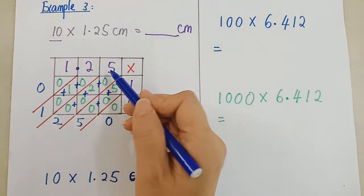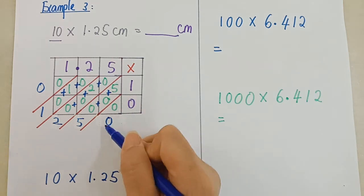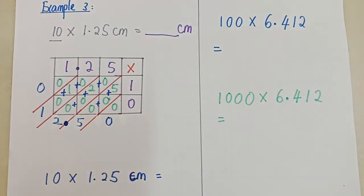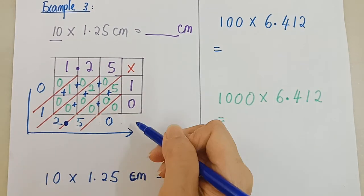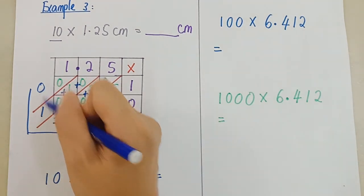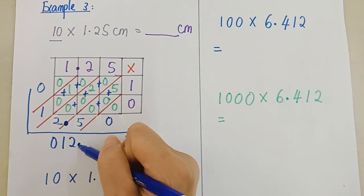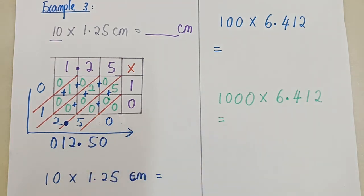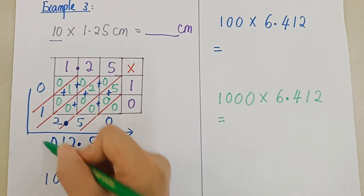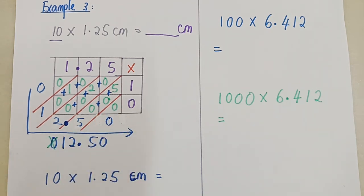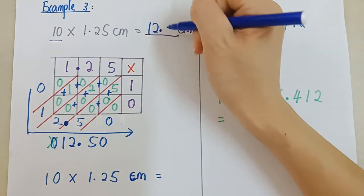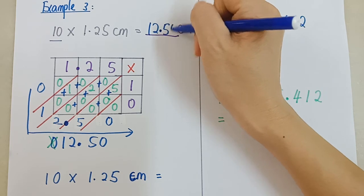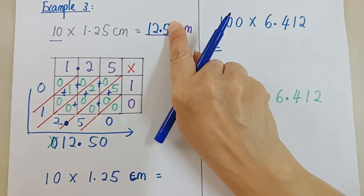Nak letak point. 1, 2 point. Dari belakang, 1, 2. So point di sini. So bila awak tulis jawapan, L-shape kan? Dari sini. 0, 1, 2, point, 5, 0. 0 di depan ini tak ada nilai. Jadi, kita boleh buangkan 0 kat depan. So kita tulis 12 point 5 0. 0 ini boleh buang juga. Kalau tak nak buang pun tak ada masalah.